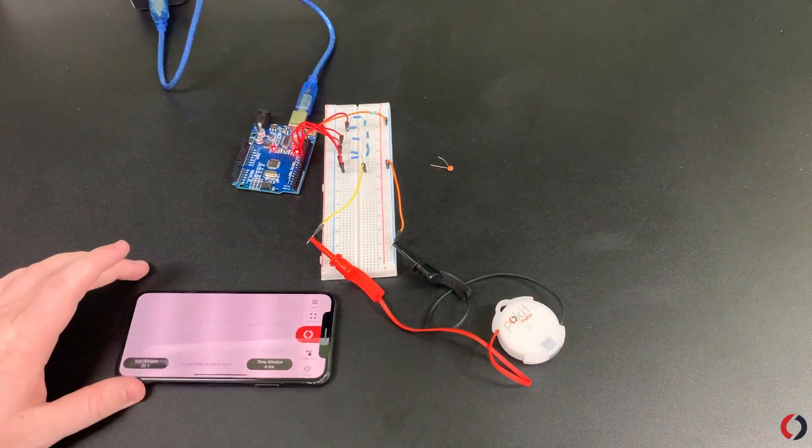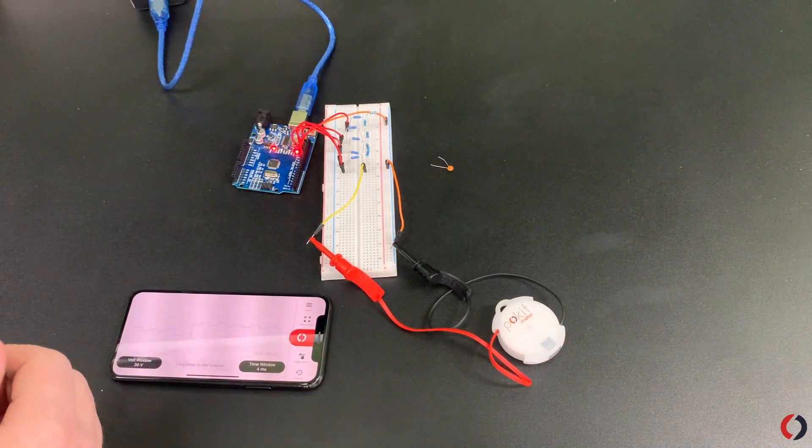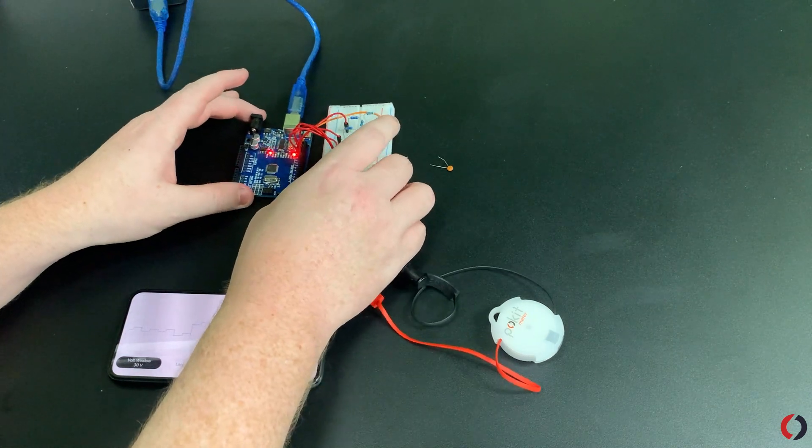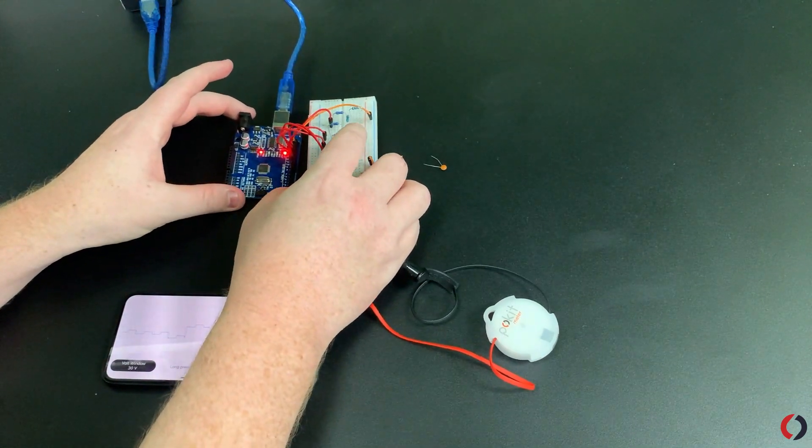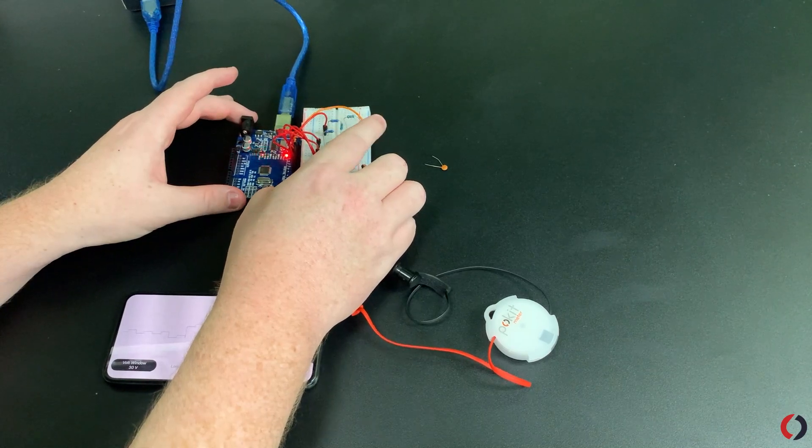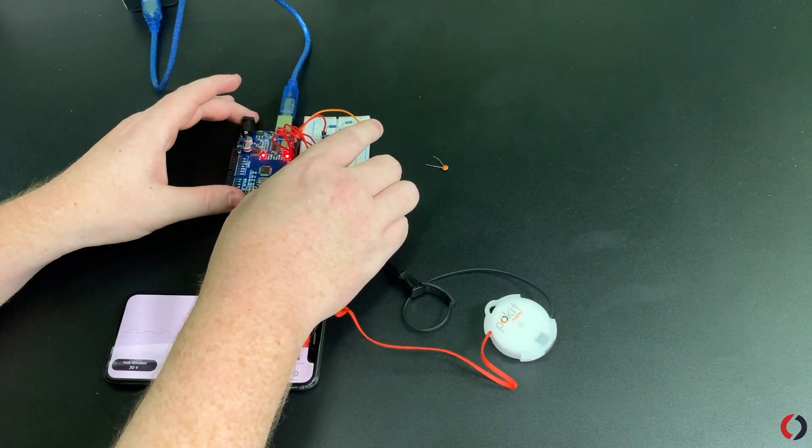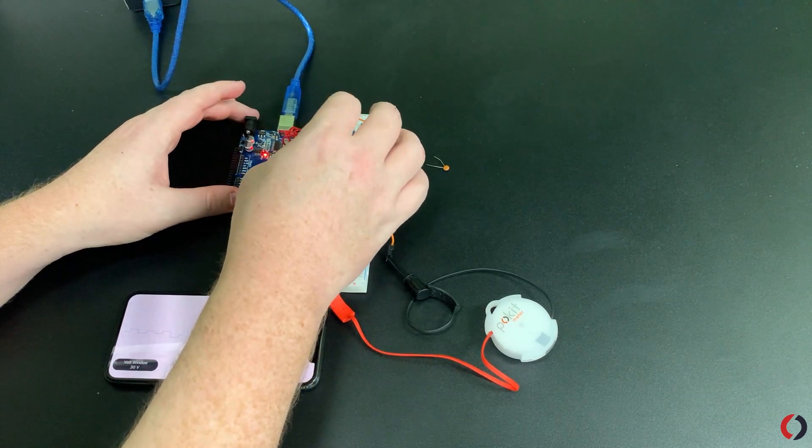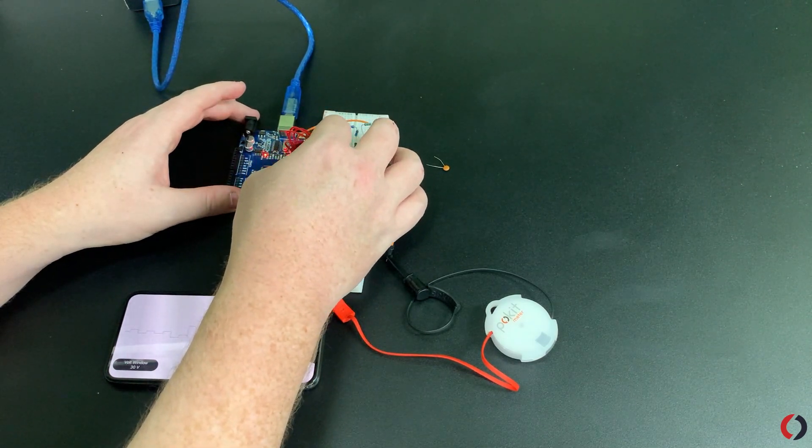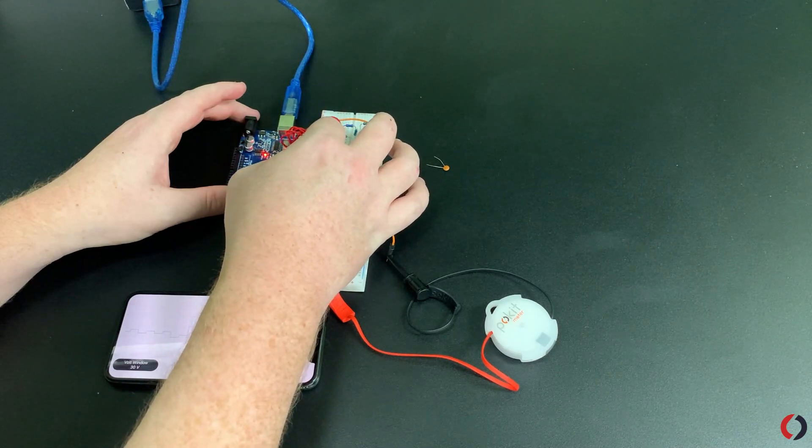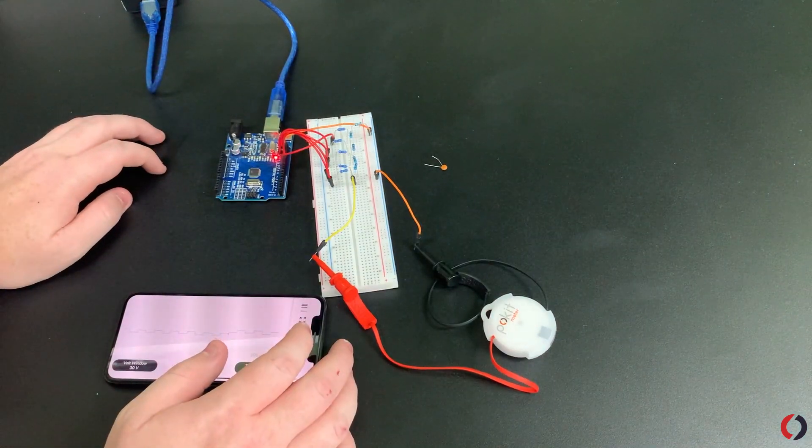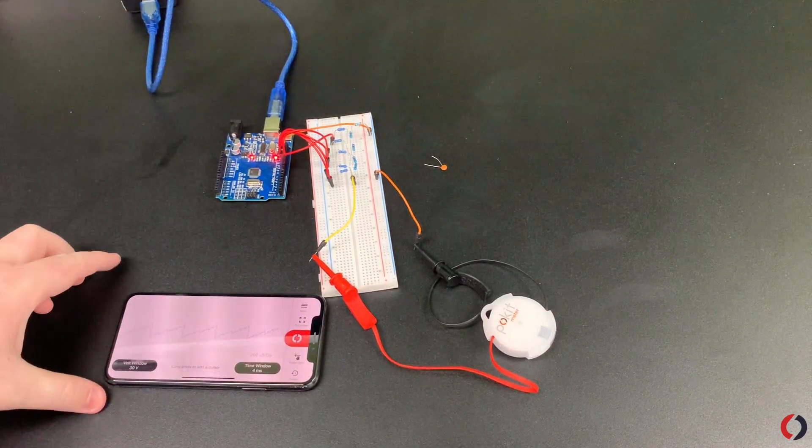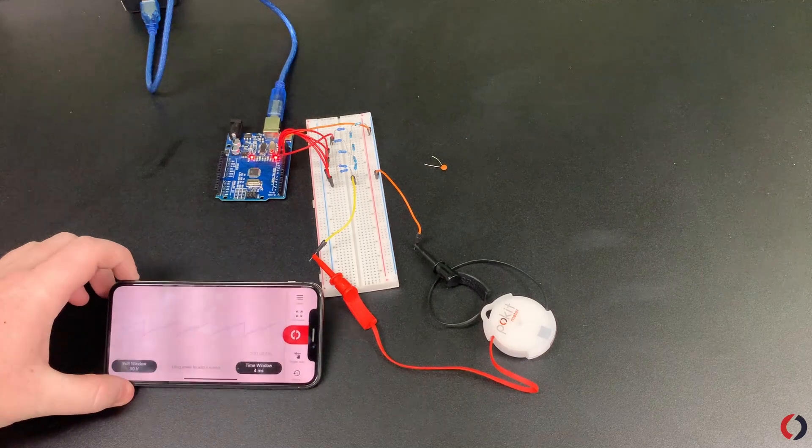So this is why it's useful to have a Pocket Meter. So let me have a look at what I've done wrong here. This does look correct, so it must be the wiring order that I've gotten wrong.